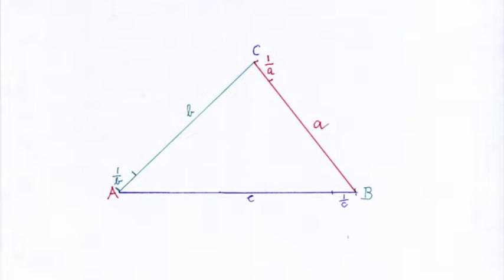Each of these segments represents the unit value of one. The size of this unit value one for side A is one over A; for side B, it is one over B; and for side C, it is one over C. All three of these units are of the same length. If we multiply unit one, which is one over A, by A, we obtain the reference value one, which is A over A. Side B will then be B over A, and side C will become C over A, which means we are using side A as the reference side to measure the lengths of the other two sides.